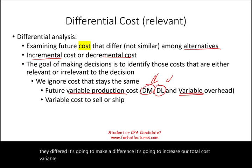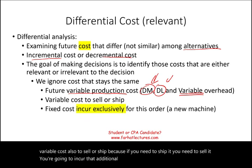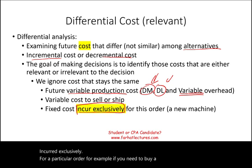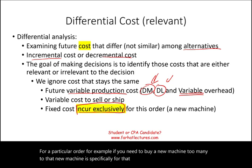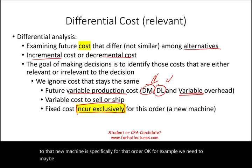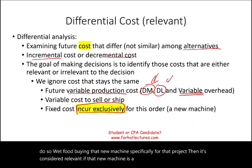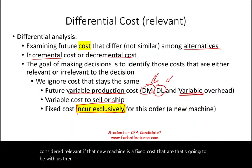Variable costs to sell or ship are also relevant because you incur additional cost if you need to ship or sell. Fixed costs incurred exclusively for a particular order are also relevant — for example, buying a new machine specifically to put a special logo on a product. However, if a fixed cost will be incurred regardless, it's considered irrelevant because it doesn't make a difference whether we accept the decision or not.